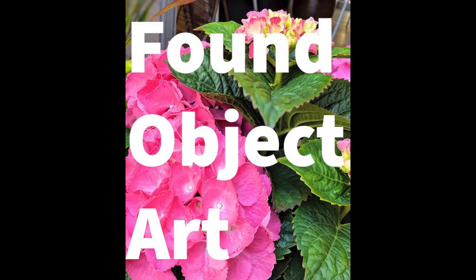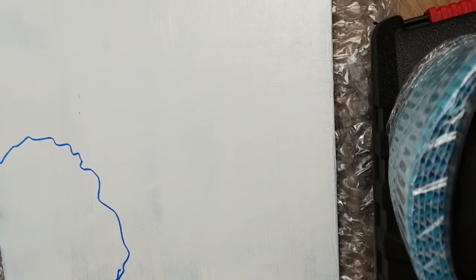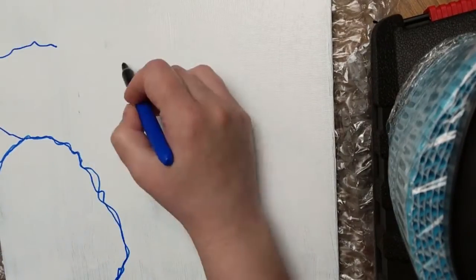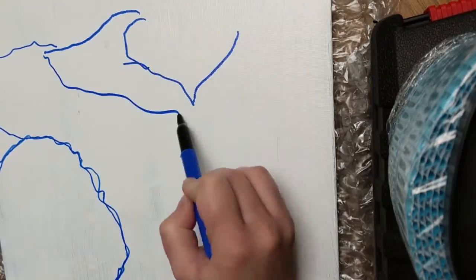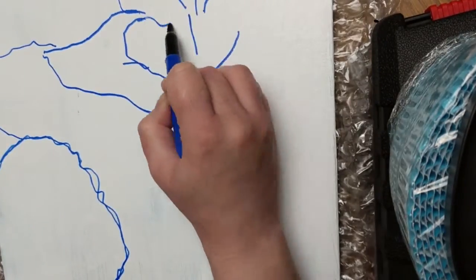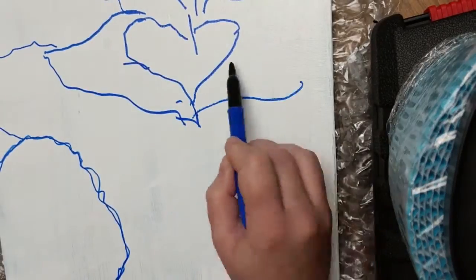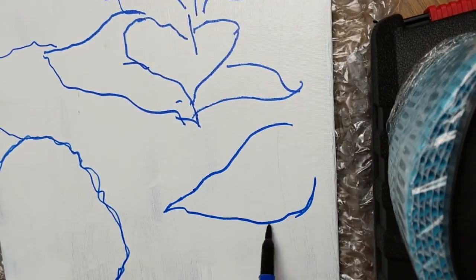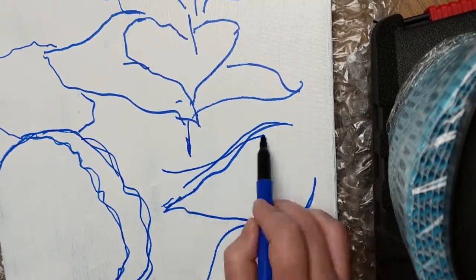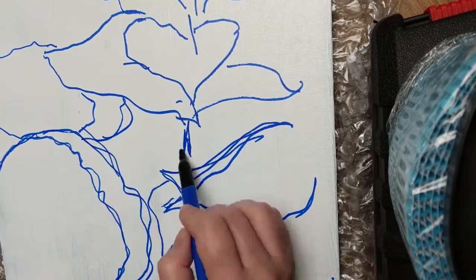Hey there 3D artists, and welcome to your final week of found object art on UAF's Visual Art Academy Online. You're gonna start this week by making a sketch on whatever you're using for your backing. I have a canvas board, and it just has to be a rough sketch so you know kind of where your objects need to go.